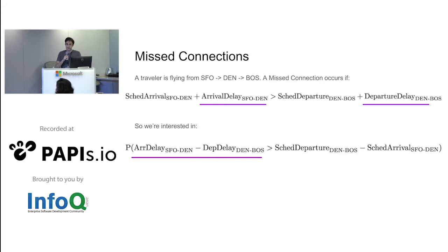I mentioned flight disruption. What does that mean? We cover three types of disruptions: cancellations, misconnections, and severe delays. Today I'm going to talk about misconnections.